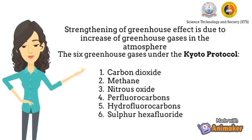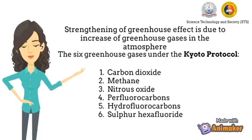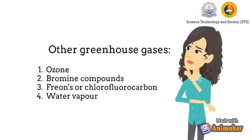Strengthening of the greenhouse effect is due to increasing greenhouse gases. The six greenhouse gases under the Kyoto Protocol are: carbon dioxide, methane, nitrous oxide, perfluorocarbons, hydrofluorocarbons, and sulfur hexafluoride. Other greenhouse gases include ozone, bromine compounds, chlorofluorocarbons (CFCs), and water vapor.